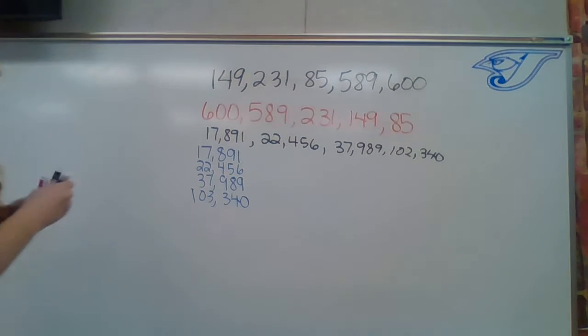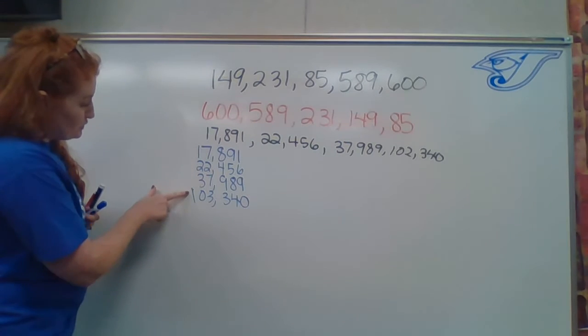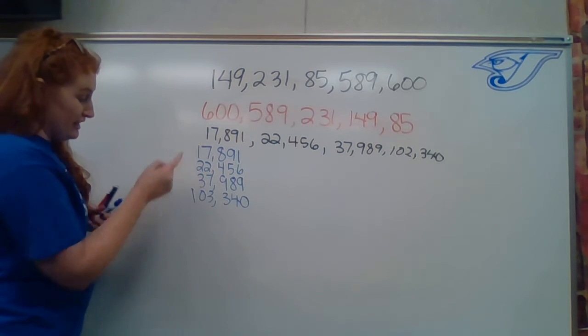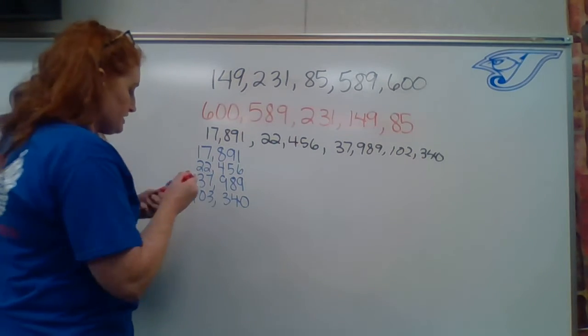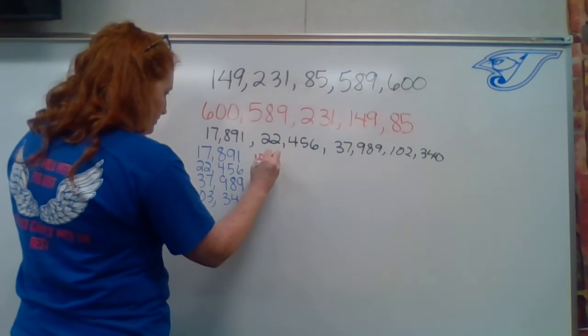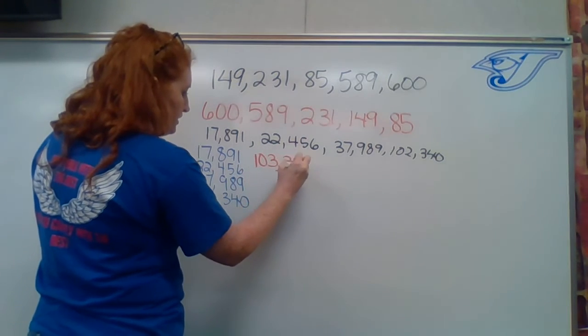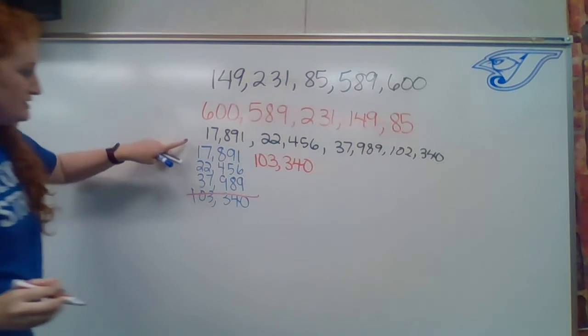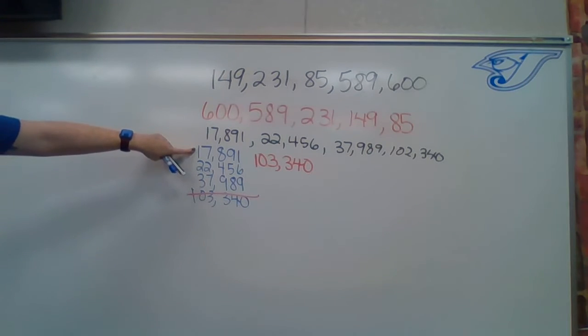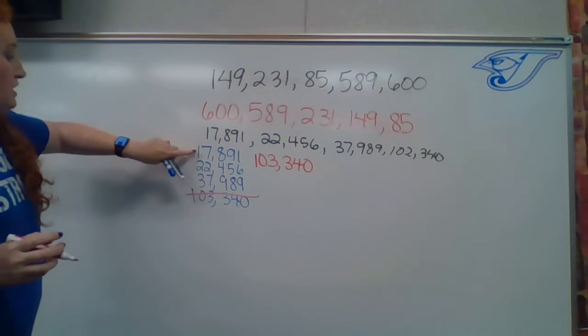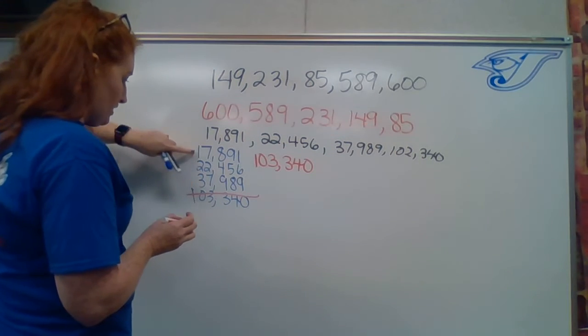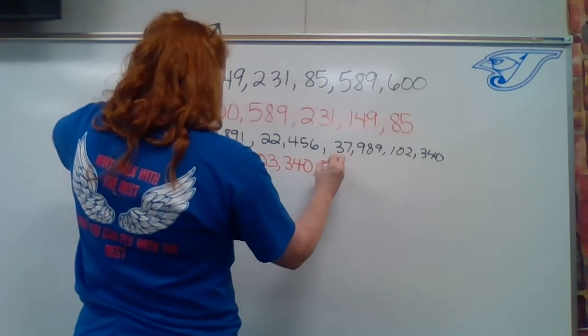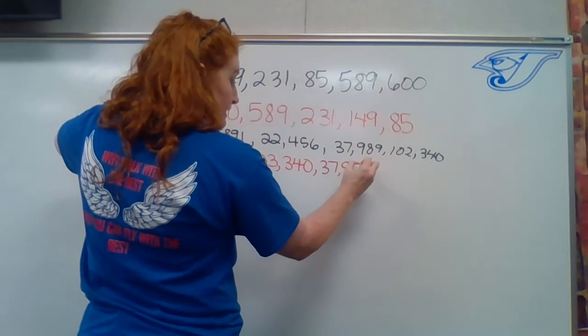So we've got our numbers and now since we are looking for the largest number, we're going to start over here. As we can see, this one is the largest because it has a digit in the hundred thousandth place and the other ones don't. So that is our first number because it is the biggest, 103,340. Now we can just look at the digits in the 10,000th place because that's what we're at right now. So we've got a one, a two, and a three. So we're going to take this number because it is bigger than these other two. 37,989.